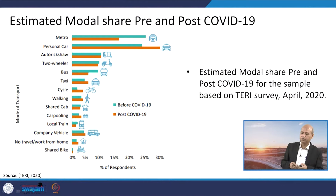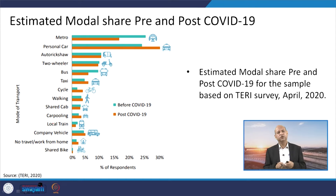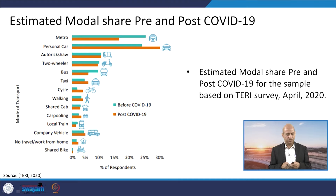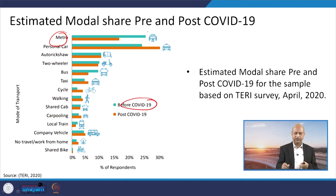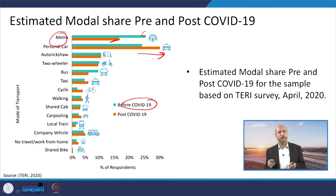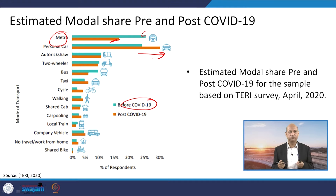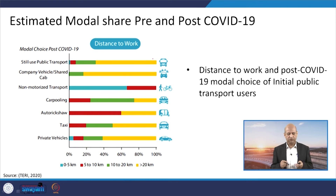Examining modal share pre- and post-COVID, the COVID situation has significantly affected our choice of public or private transportation. Metro usage before COVID was much higher, but after COVID-19 it has reduced significantly. Personal car usage has increased, because people have the perception and fear that contact with others might lead to COVID-19 infection, so for safety purposes people have shifted toward privately owned vehicles.